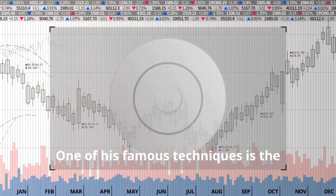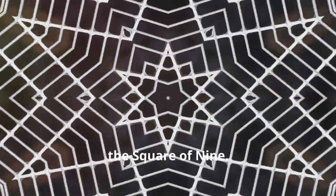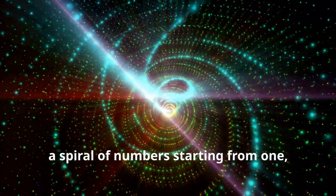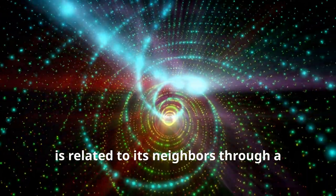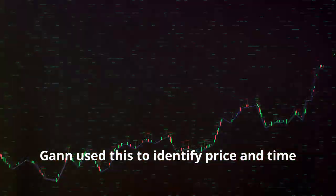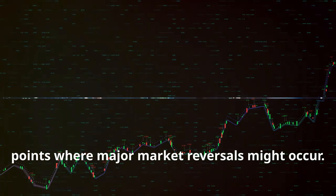One of his famous techniques is the 90-year cycle, which is essentially a multiple of nine. Another crucial tool in Gann's arsenal is the square of nine. This square is a spiral of numbers starting from one, arranged in such a way that each number is related to its neighbors through a series of geometric angles and distances. Gann used this to identify price and time points where major market reversals might occur.